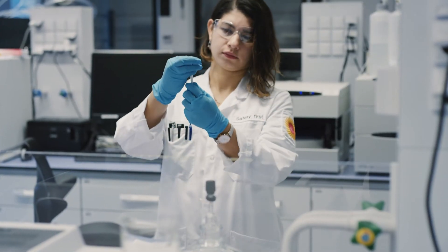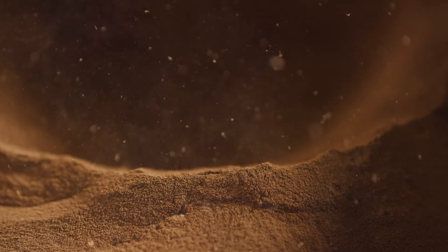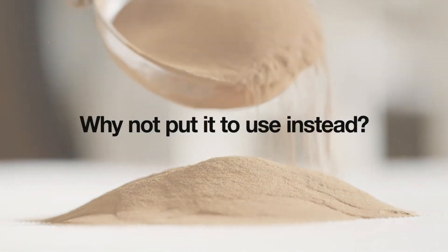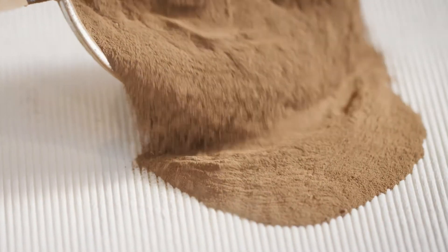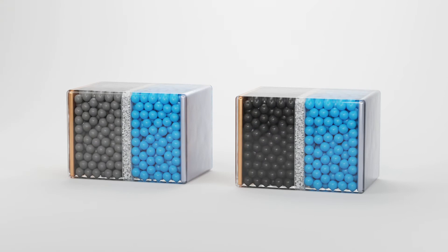Lignin is usually just burned for energy, but why not put it to use instead? Since millions of tons of lignin are produced every year, one benefit with using lignin-based hard carbon in the anode is its amorphous and highly open structure.